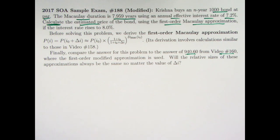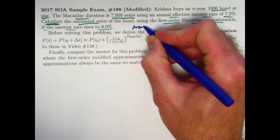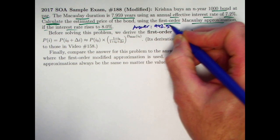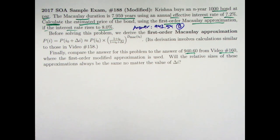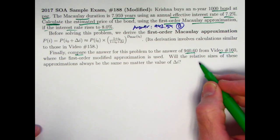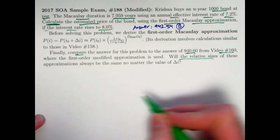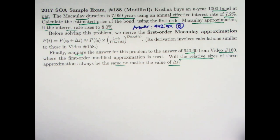The First Order Macaulay Approximation turns out to be more accurate. In this case, the interest rate rises to 8%. Before we solve this problem — which just involves using this formula, a complicated-looking formula but not too hard to use — I'd encourage you to try to get the answer before I do the derivation, maybe pause the video. The answer is 942.54, which is choice B on sample exam problem 188. I will first derive this formula, then use it, and then compare this answer with the modified approximation result from video 160. This one is bigger, and we've said it's more accurate. You might wonder: will the Macaulay approximation always be bigger than the modified approximation, no matter what delta i is?